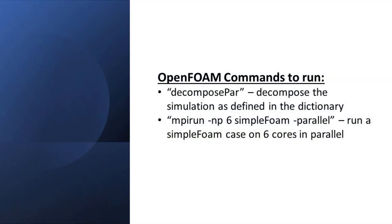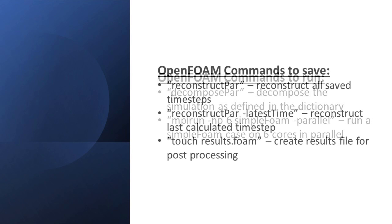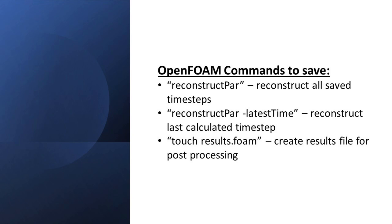To run the simulation in parallel, once the boundaries and mesh are set up, use the following commands. If you prefer to run the simulation on one core, you can simply type the solver name into the command line. To save the simulation, use the following command. You can either reconstruct all time steps for the transient case or just the last one for the steady state case. If you ran the case on one core, you just need to create the results foam file.